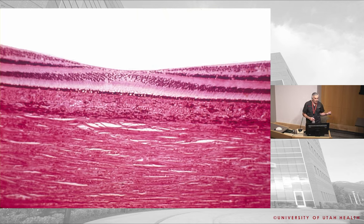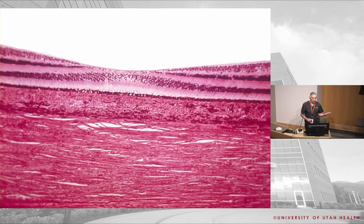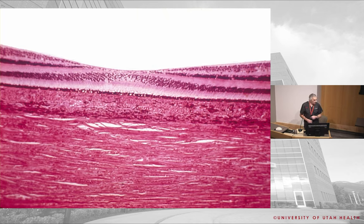In the peripheral retina, the purpose is side vision and motion detection. Up to a hundred rods may link to a single ganglion cell, providing summation. That's why on a dark night you can see a dim streetlight in your periphery but it disappears when you look directly at it. Evolutionarily this is important — detecting a predator in your peripheral vision. The center, by contrast, is optimized for fine detail.